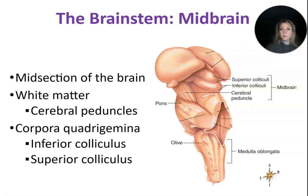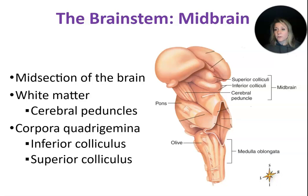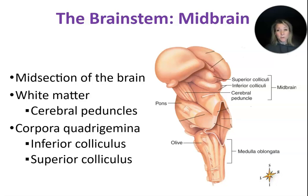There are a couple of structures you need to know. The first are the cerebral peduncles, which you can see labeled here by the midbrain. These are responsible for sending motor signals out to the body. A good memory trick: ped, like a pedal on a bicycle — you have to move to do that — so the cerebral peduncles are going to be in charge of some motor functions.